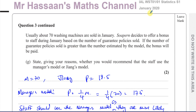That concludes question number three from the January 2020 S1 International A-Level Edexcel paper. Other questions from this paper can be found in the playlist at the end of the video, as well as other questions from the topic of correlation and regression. Subscribe by clicking the link — thank you for watching and see you soon.